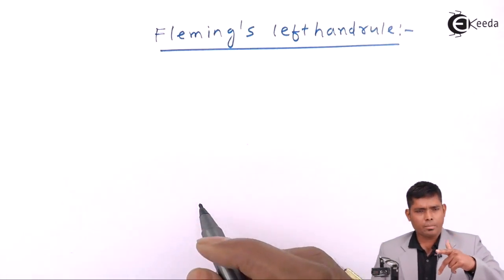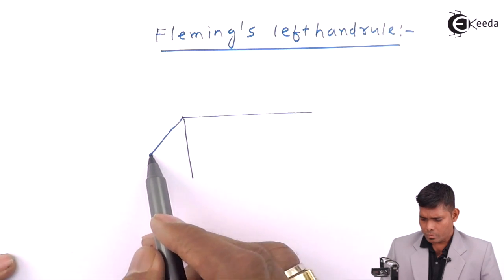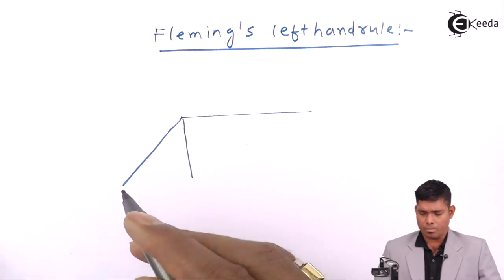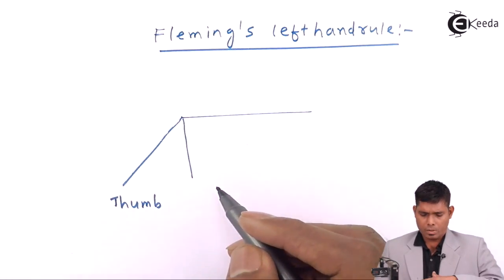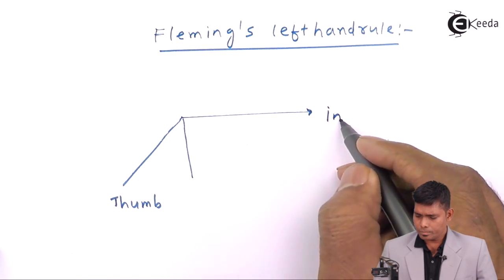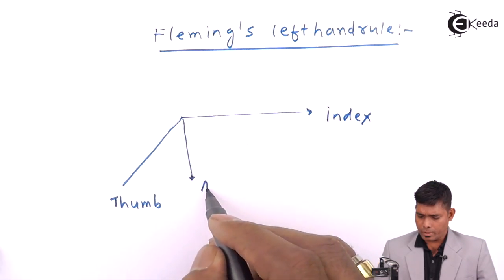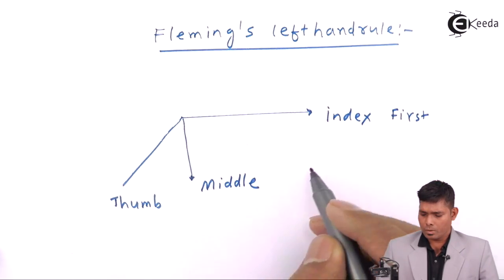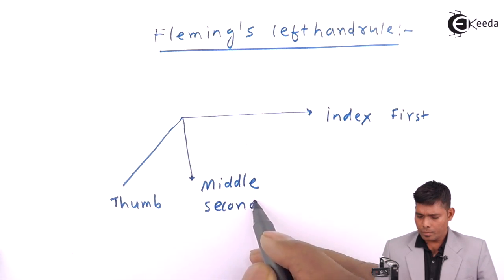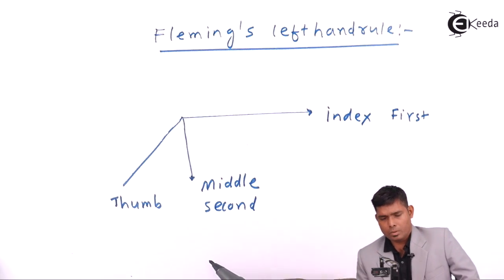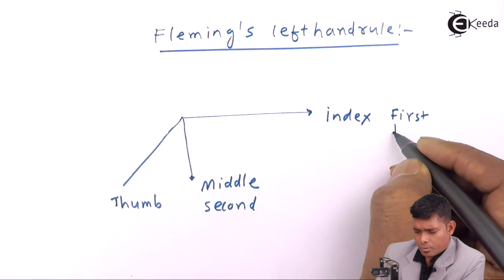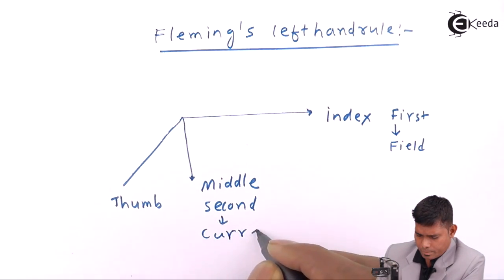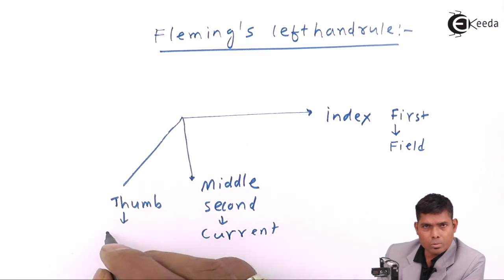To draw this diagram: the first finger is the index finger, this is the middle finger, and this is the thumb. The first finger I call the first finger, this I call the second finger, and this is the thumb. The first finger gives the field, the second gives the current, and the third gives the direction of motion of the conductor or force.